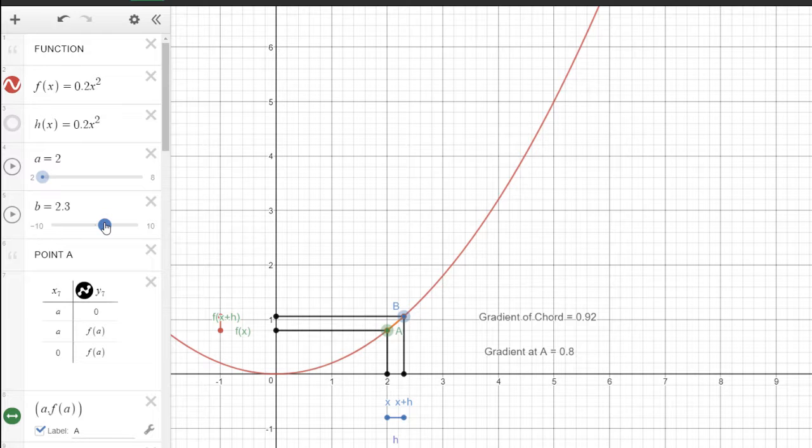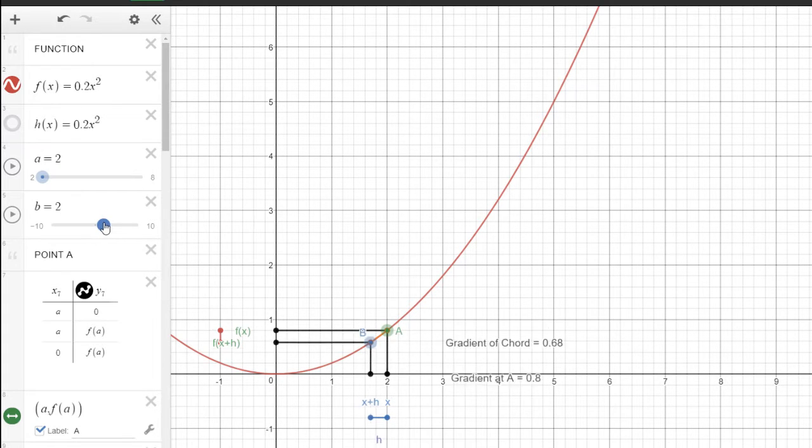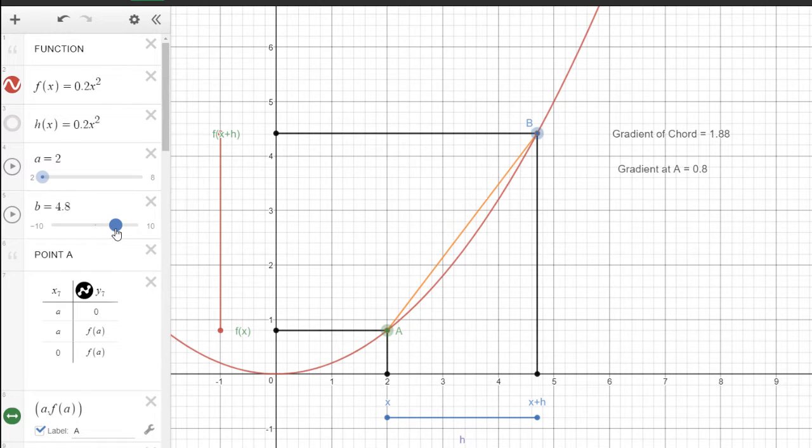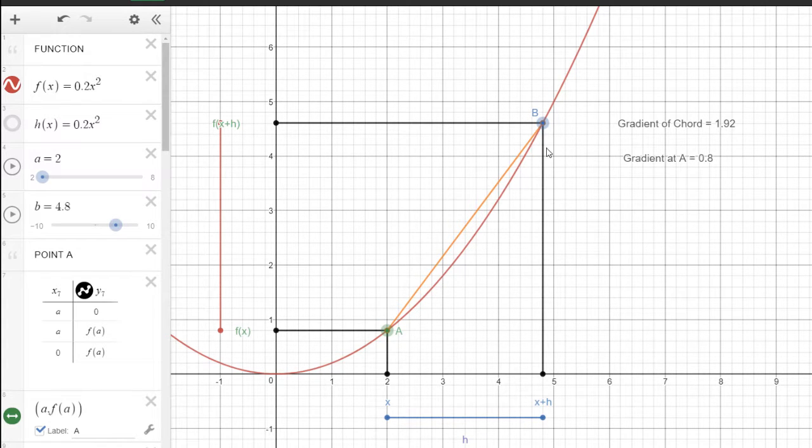So the actual gradient of A is 0.8. So there you go, and it's actually equal to 0.8. So what we're doing is we're doing something called taking a limit. So we're finding the gradient of this chord here, but we're finding the gradient as this value h tends towards 0.